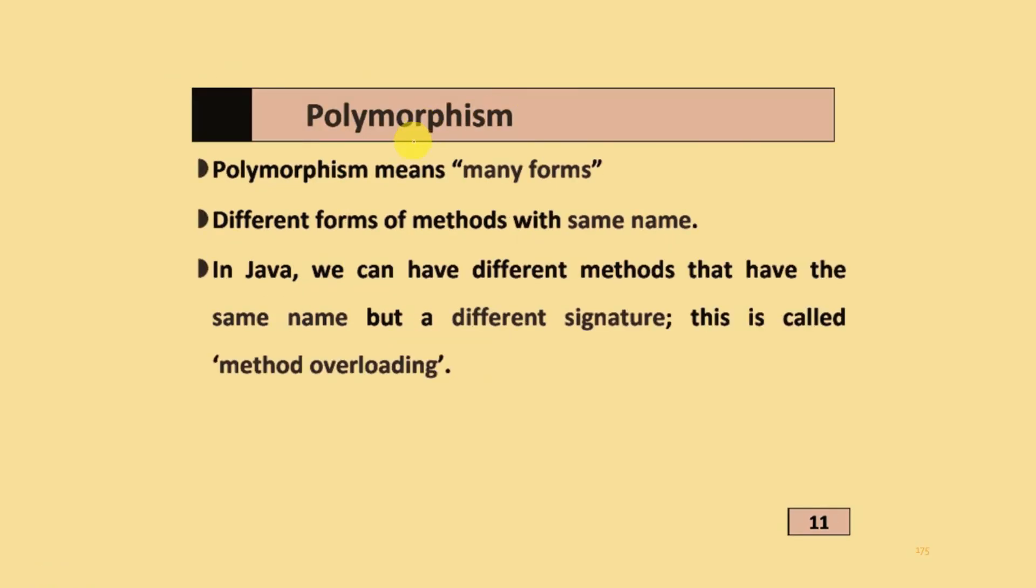Next topic is polymorphism. Polymorphism means many forms: different forms of methods with the same name. In Java, we can have different methods that have the same name but different signatures. This is called method overloading.